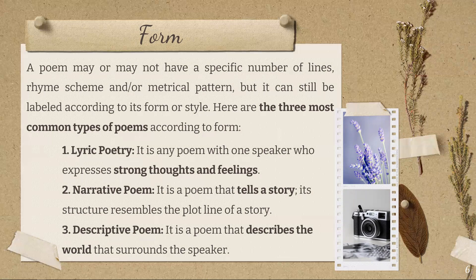A poem may or may not have a specific number of lines, rhyme scheme, and a metrical pattern, but it can still be labeled according to its form or style. Here are the three most common types of poems according to form. Lyric poetry is any poem with one speaker — not necessarily the poet — which expresses strong thoughts and feelings. Most poems, especially modern ones, are lyric poems.